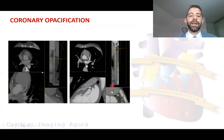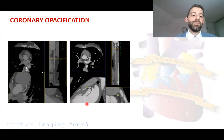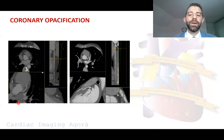It's important to get images like these ones on your right-hand side with nice coronary opacification, because if we get images like those on your left-hand side, the diagnostic accuracy is really poor and we risk missing important information.